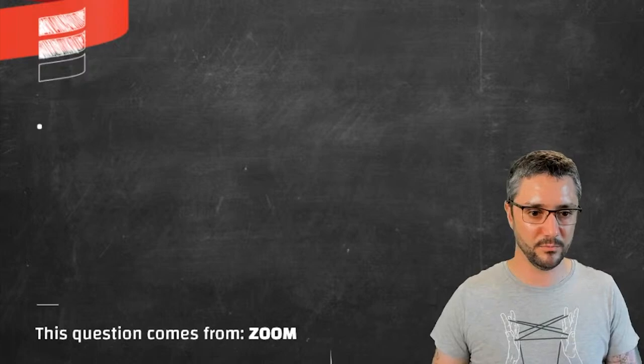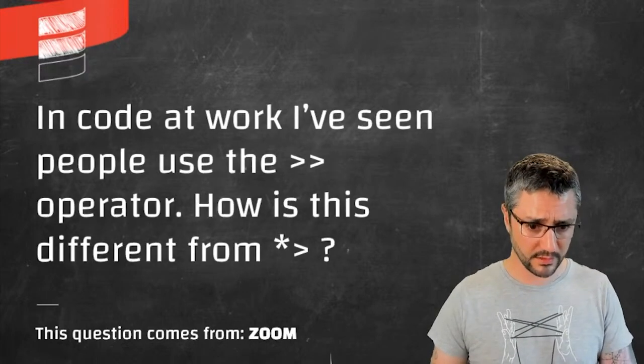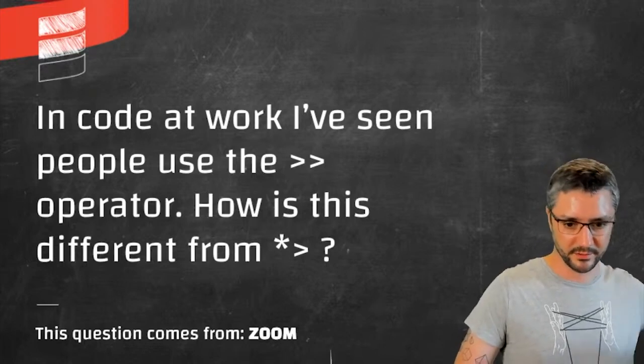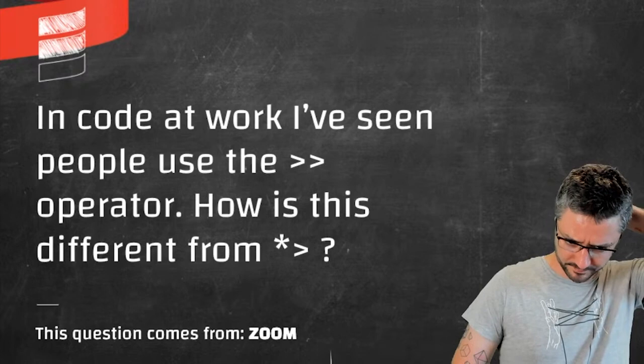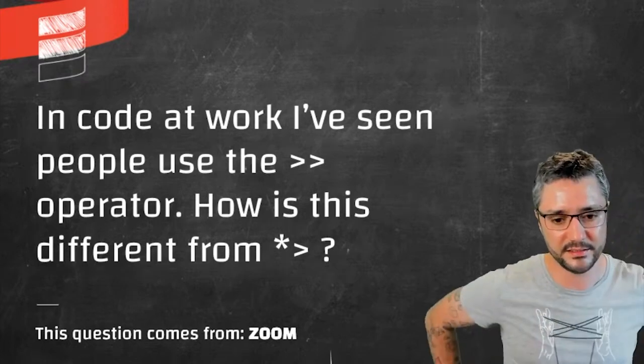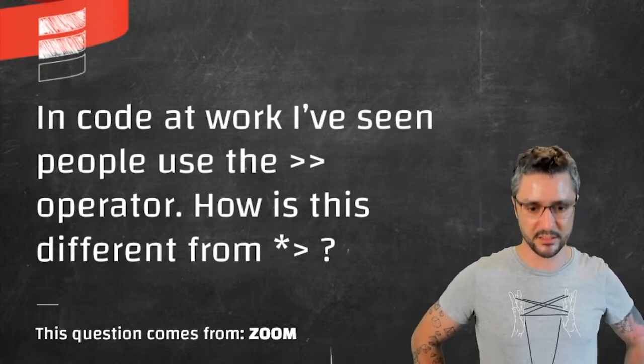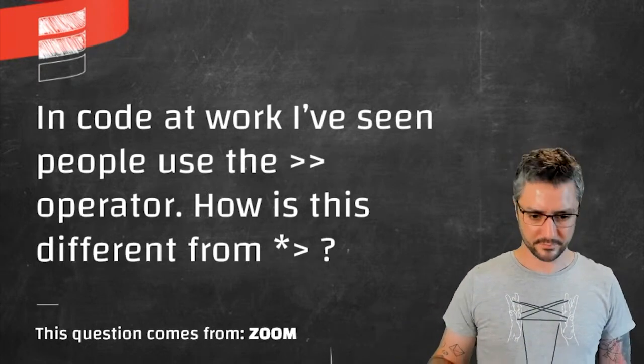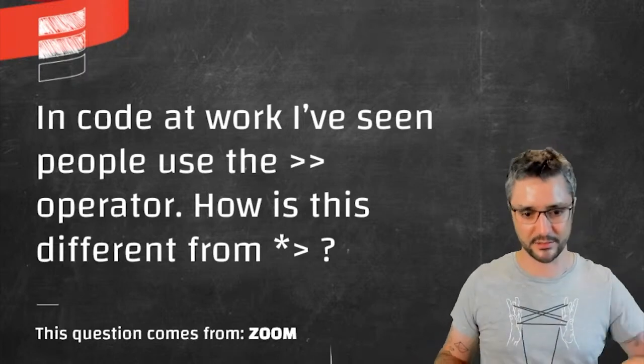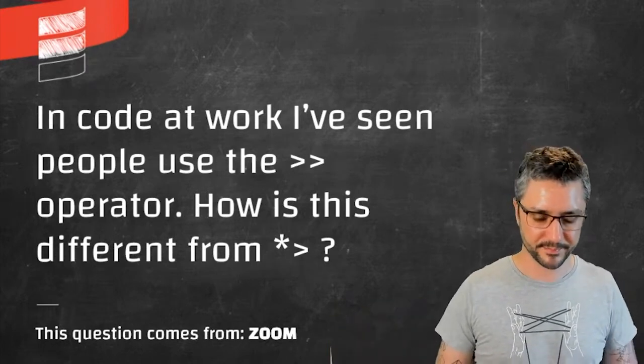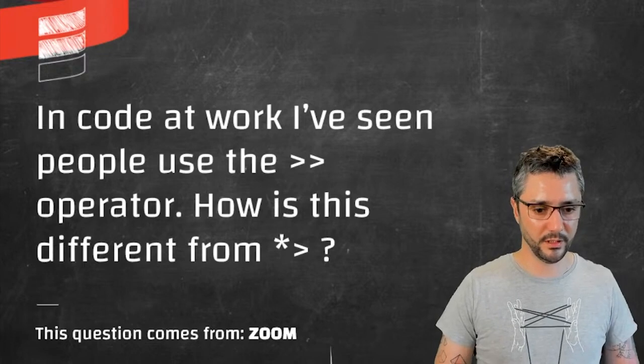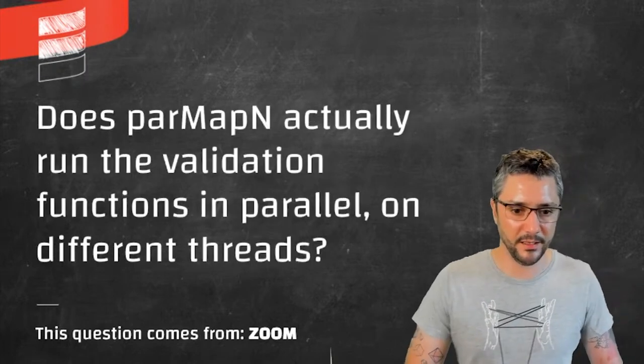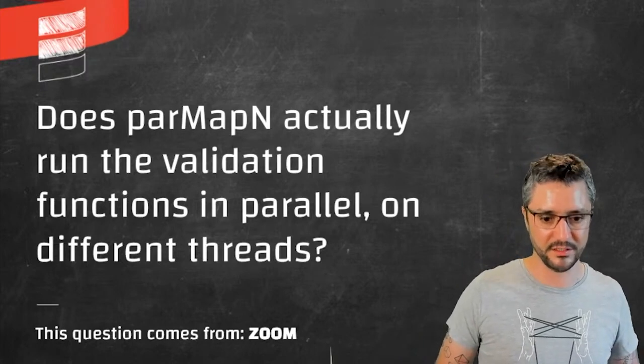I will now move to the Q&A section. So in code at work, I've seen people use the greater than greater than operator. Is this different from star greater than? I think it is. I think greater than greater than is about sequencing. So maybe I'm wrong. But I think greater than greater than is an alias to andThen. So if the first, the thing on the left of greater than greater than fails, the thing on the right won't be evaluated. I hope I didn't say anything wrong. And that answers your question.